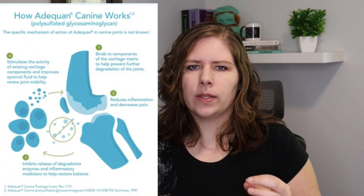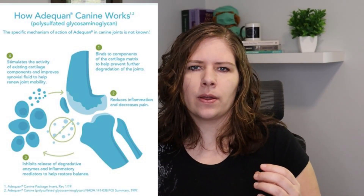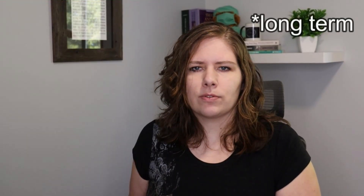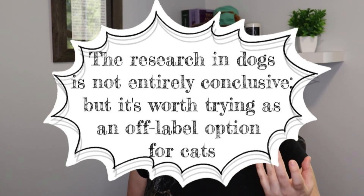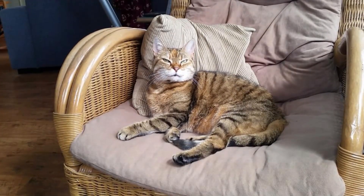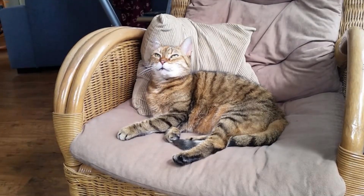Adequan can be used to help support the cartilage in the joints and to improve the quality of the joint fluid, meaning better cushions between the bones. There isn't research in cats for Adequan specifically, but using it off-label for cats is done all the time. The body of research on Adequan isn't entirely conclusive, so this is an adjunct medication. Generally, you start by giving the injections twice a week for a month, then wean down to once a month, depending on how your cat responds.